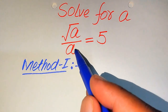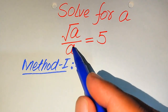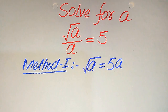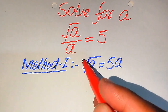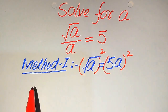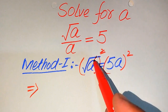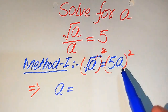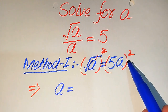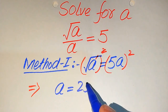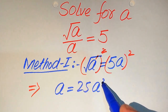In the first method, we move the a to the right-hand side — because it is dividing — so when we move it to the right-hand side it is multiplied by 5 and becomes 5a. To find the values of a we need to remove the square root sign from the left-hand side, so we square both sides. The square root cancels and we get a equals 5 squared times a squared, since the square of 5 is 25 and the square of a is a squared.